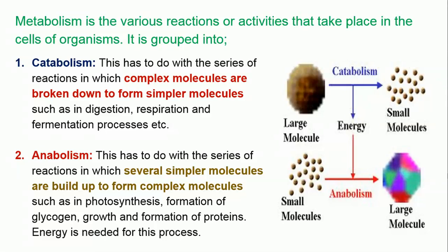Number 2: Anabolism. This has to do with the series of reactions in which several small simpler molecules are combined and build up to form large or complex molecules. We see these anabolic reactions during photosynthesis, formation of glycogen, during growth reactions, and formation of proteins. For example, during photosynthesis, small molecules such as carbon dioxide and water build up to form a large molecule known as glucose.